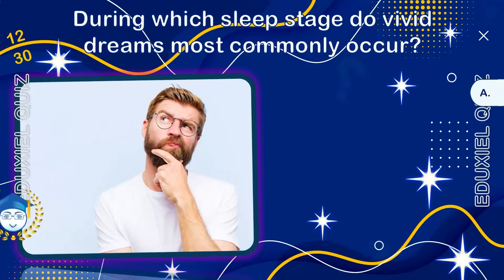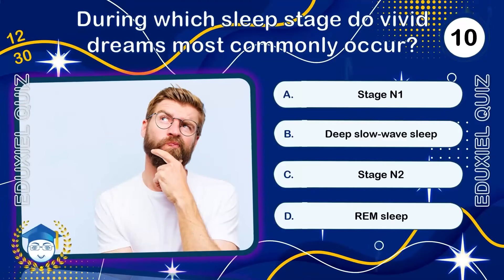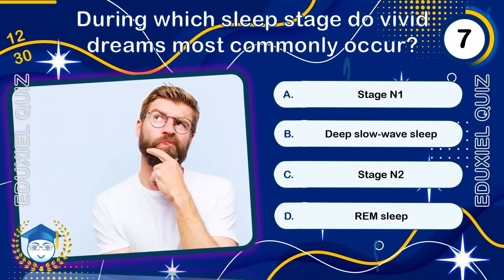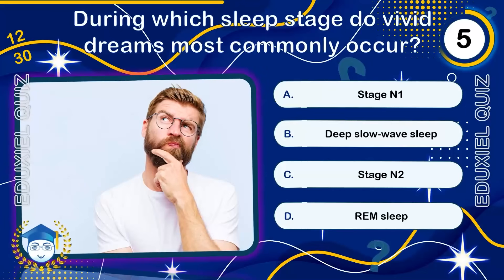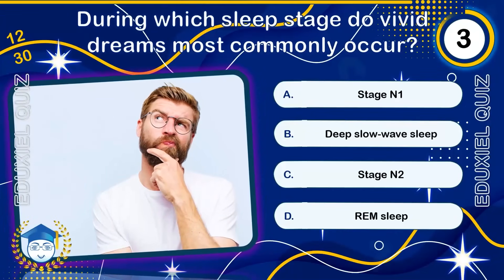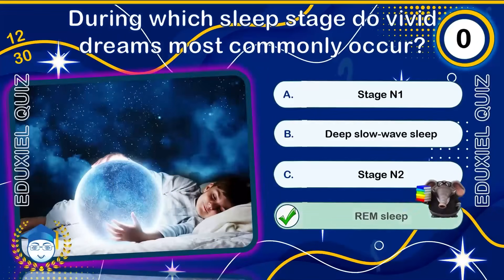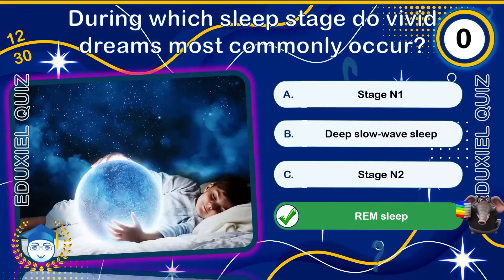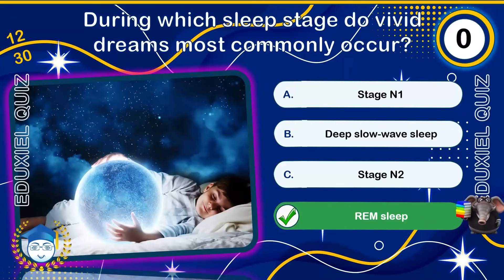During which sleep stage do vivid dreams most commonly occur? REM sleep, or rapid eye movement sleep, is when most vivid dreaming occurs. The body becomes temporarily paralyzed to prevent acting out dreams, while the brain is nearly as active as when awake. REM sleep makes up about 20 to 25 percent of total sleep in adults.